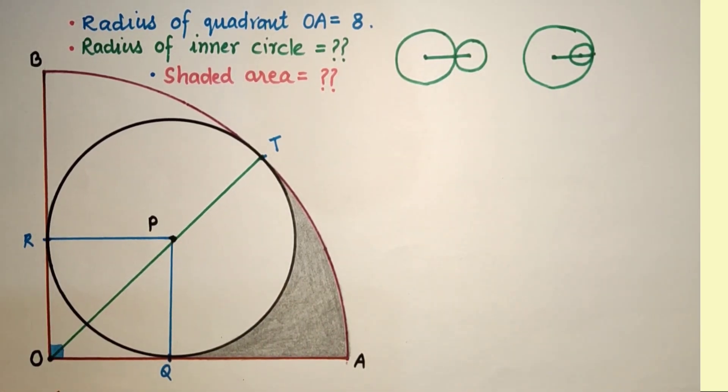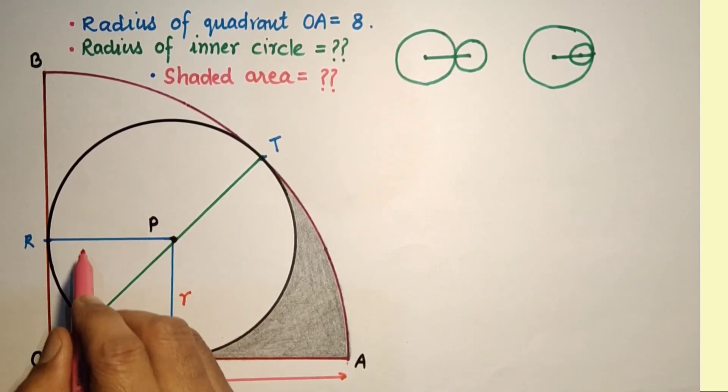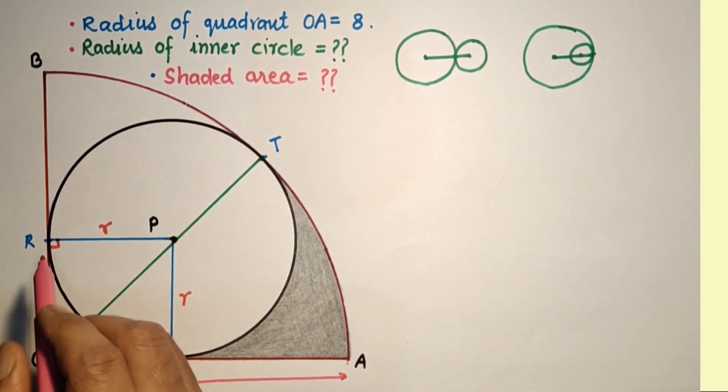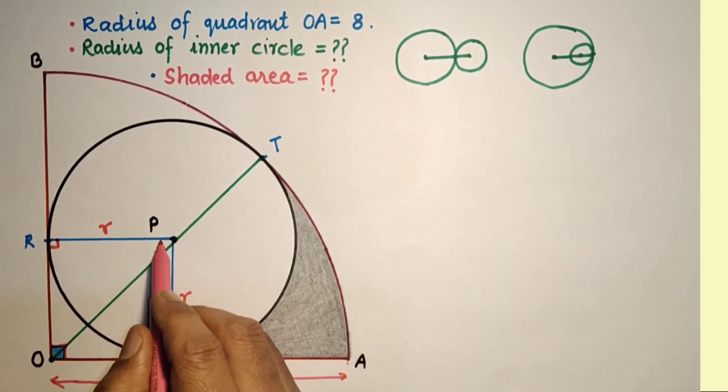Now we are given that OA is 8 units. Let this radius be R, so this is also R. Radius and tangent at the point of contact will be perpendicular, so this is 90°. Since this is a quadrant, this is 90°. These three angles are 90°.